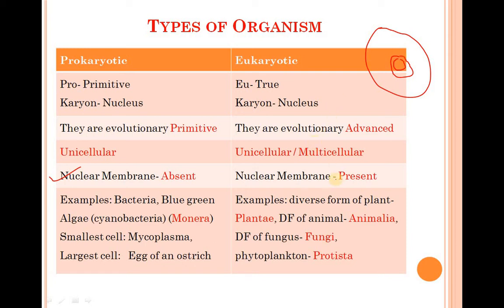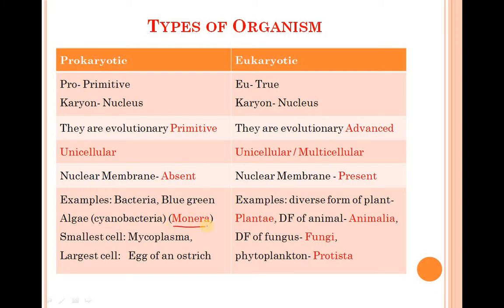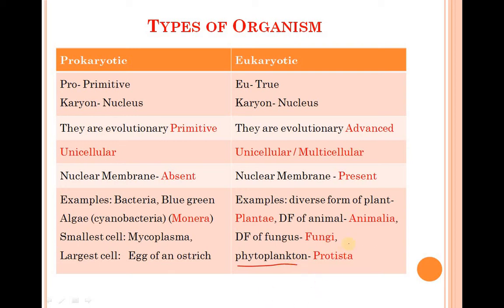Examples are very important from the examination point of view. Prokaryotic examples: bacteria and blue-green bacteria, which we call cyanobacteria. Prokaryotic cells are generally smaller; an example of a smaller cell is mycoplasma, and the egg of an ostrich is an example of a larger cell. Examples of eukaryotic organisms: diverse forms of plants are known as Plantae, diverse forms of animals as Animalia, diverse forms of fungus as Fungi. Phytoplanktons are microscopic plants in water that perform photosynthesis; they are called Protista.